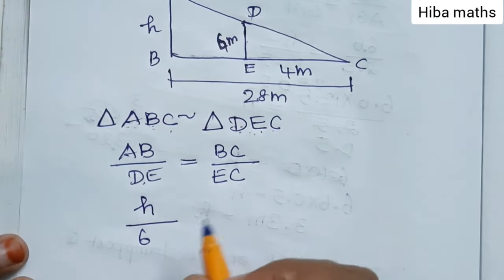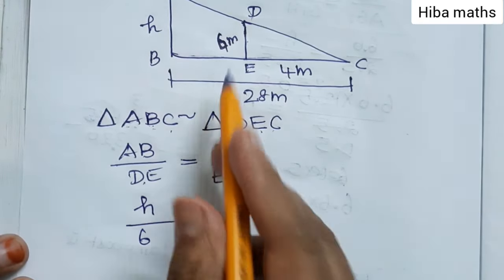AB value is 6 meters, BC is 4, and EC is 28.